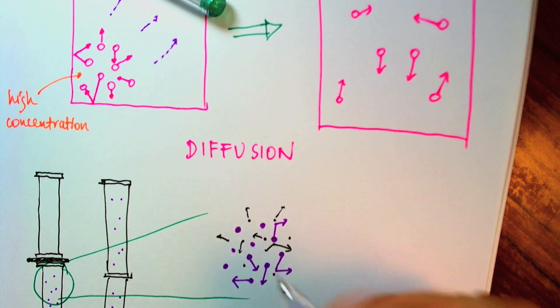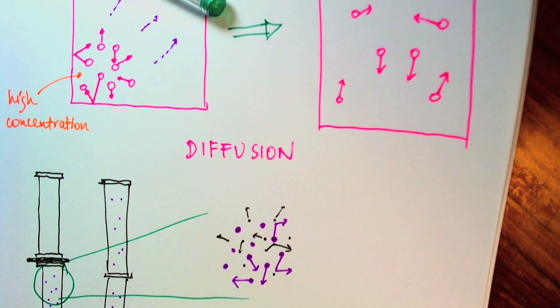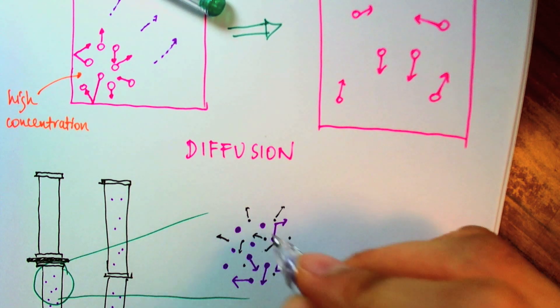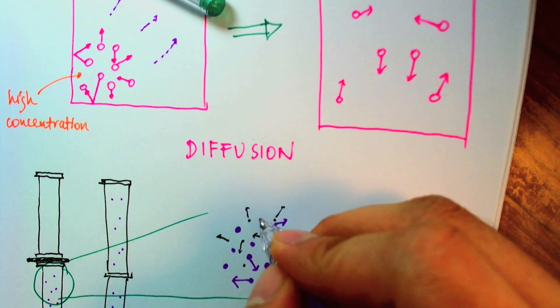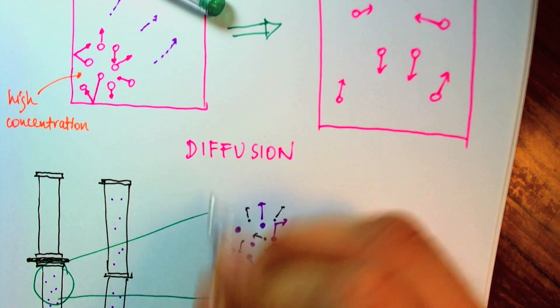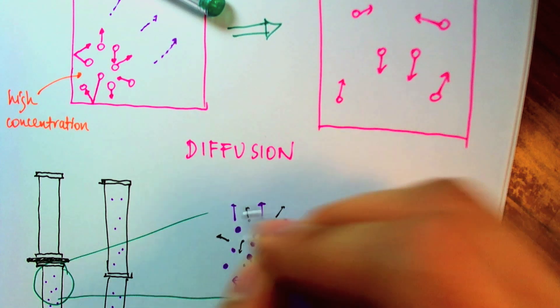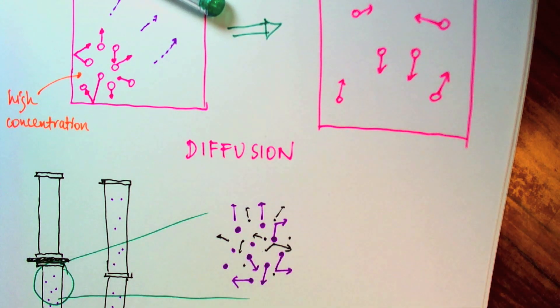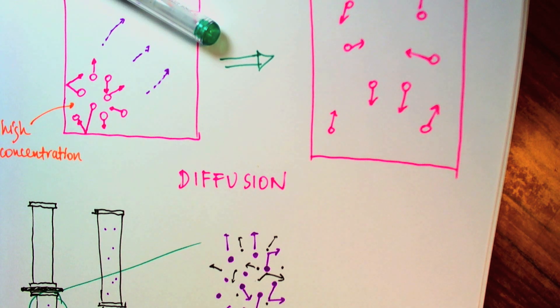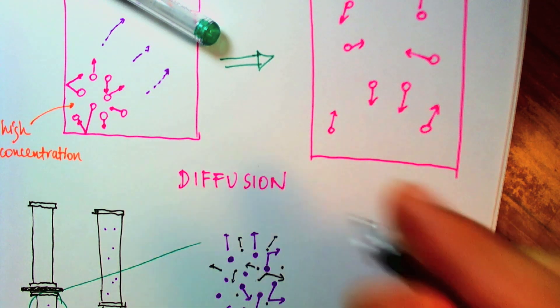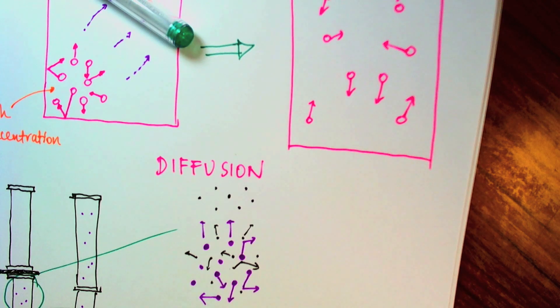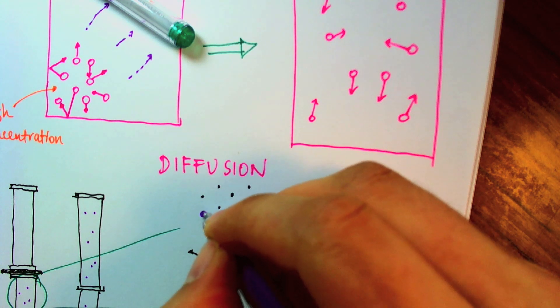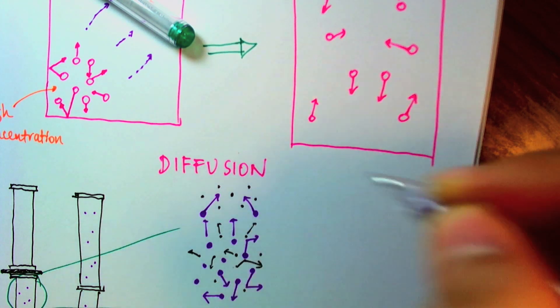Since the bromine atoms are all clumped together here, over time we would expect that the probability of them moving away from each other is higher than them just clumping around. And since there are walls on both sides and at the bottom of them, they would tend to want to move upwards towards the empty container. Well, it's not empty, it contains air. So, let me just draw some air up here.